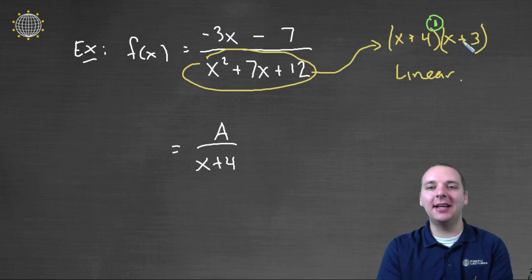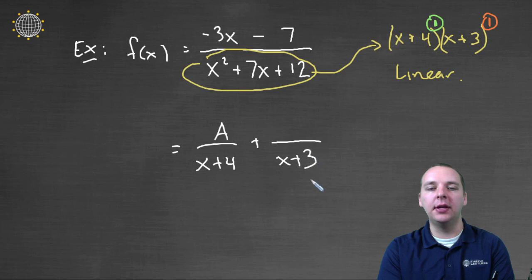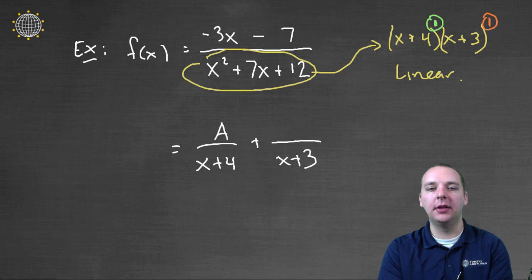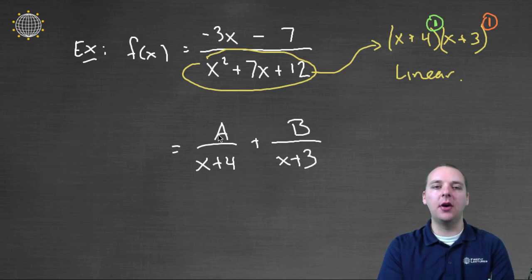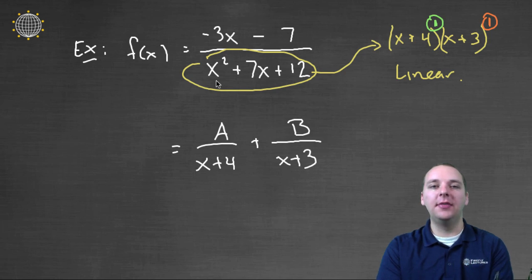Now what about the second factor? It looks similar — it's not repeated, it's to the first power as well. So it's going to contribute a term with a denominator of X plus 3. I can't use A again since that's already taken, so I choose a different letter like B. I don't know what A and B are right now, but notice I did not use subscripts — I didn't call them A sub 1 and A sub 2. I just use natural letters A, B, C, etc. So this is what I call the template for the decomposition of this rational function.